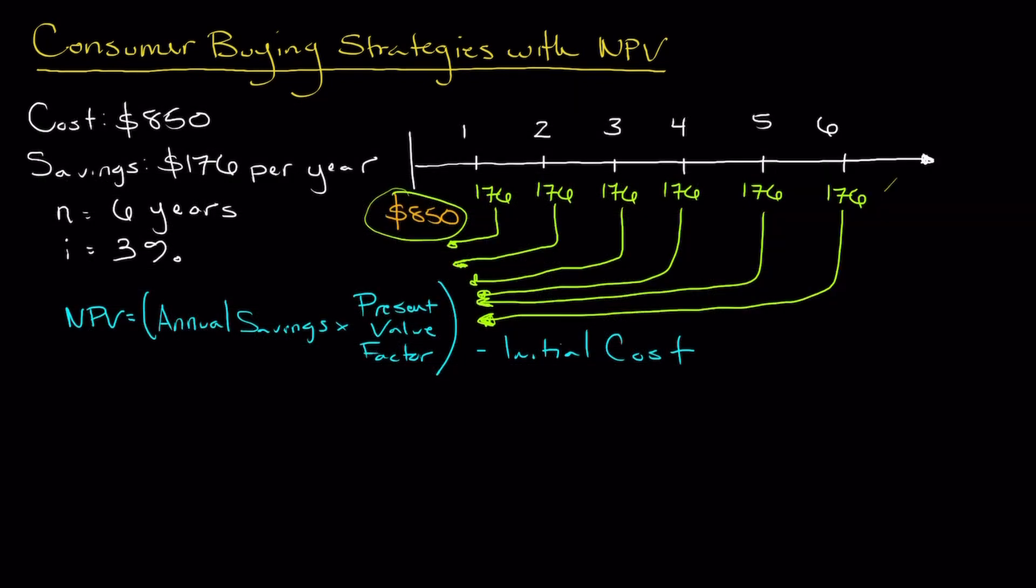So let's go ahead and fill the information in. We know that we're solving for NPV, and our annual savings is $176. We are going to multiply that by our present value factor, which we found to be 5.417, and then we're going to subtract our initial investment or initial cost, which is $850. Now, just moving the equation down, solving for in parentheses first: $176 multiplied by that present value factor of 5.417 actually gets us $953.39 if we round to the nearest hundredth. Then we can subtract our $850 investment, and we're going to get $103.39 total.